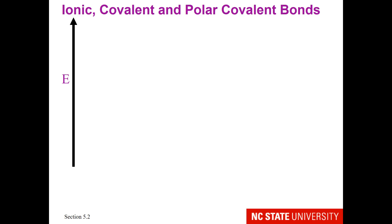In the previous lecture, we sorted bonds into three different types: ionic, covalent, and polar covalent bonds.